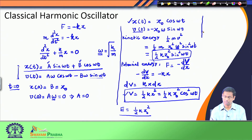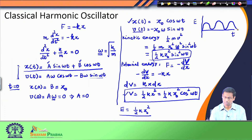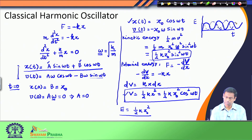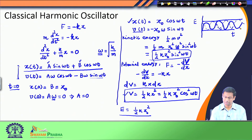If I plot the results: this is my time axis and this is my energy axis. The kinetic energy is a sine squared function and the potential energy is a cosine squared function. The thick line is the kinetic energy which is a sine squared function, the dashed line is the potential energy which is a cosine squared function, and the constant line is your total energy.